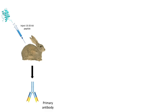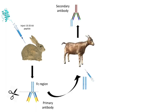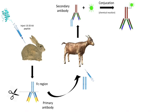To create secondary antibodies recognizing our primary antibodies, we take part of the Fc region of the primary antibody and inject this into another animal, a goat for example. The immune system of the goat will then produce antibodies against this Fc region of our primary antibody. As we did before with the rabbit, we can isolate the antibodies from the blood serum of the goat and we have our secondary antibody. The secondary antibody is then taken to a lab and conjugated to a fluorescent molecule.